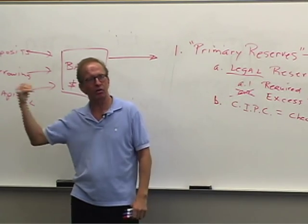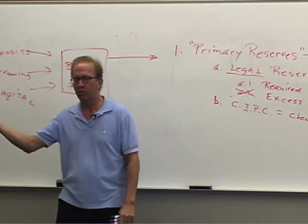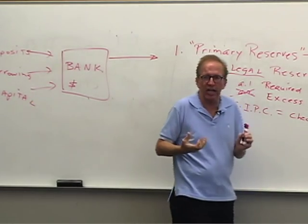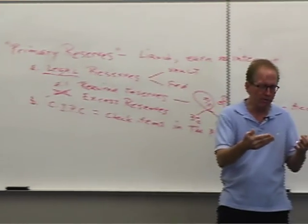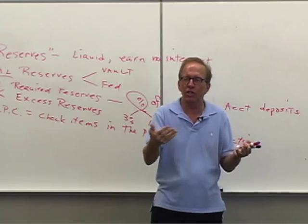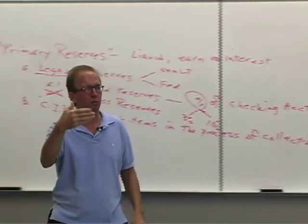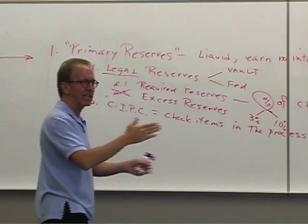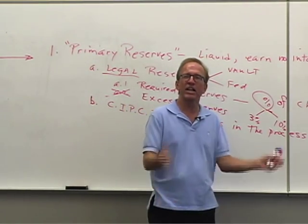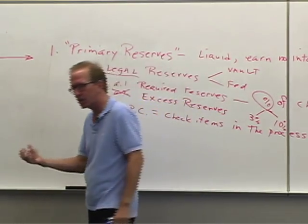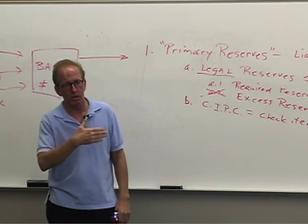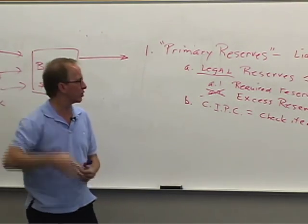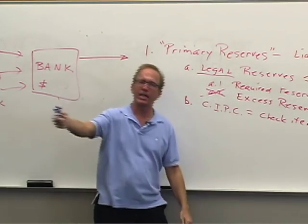If the employer banks locally, we meet with the other banks in town at the end of the day, exchange checks, net them out against each other, and settle up on reserves — telling the Federal Reserve to transfer the net amount from one reserve account to another. If the check is written on a distant bank, we send it to the Federal Reserve to collect and they credit our reserve account while debiting the other bank.